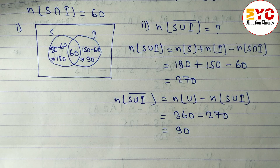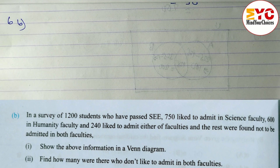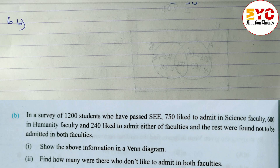Now look at question number 6b. In a survey of 1200 students who passed SE, n(U) = 1200. 750 students like to be admitted in science faculty, so n(S) = 750. 600 like humanity faculty, so n(H) = 600.